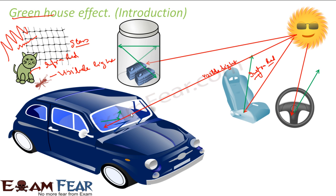So infrared will not be able to cross the glass and it will be trapped inside, but visible rays will be able to cross the glass. This is the greenhouse effect — because infrared has a higher wavelength, it will not be able to cross the glass, while visible light with a smaller wavelength will. If you do not understand this concept, please watch the optics section in physics where we explain it in more detail.